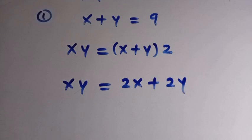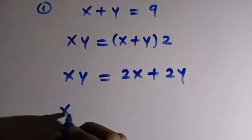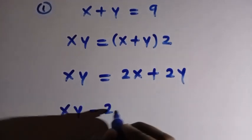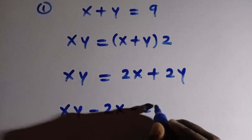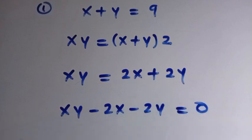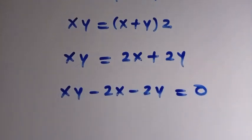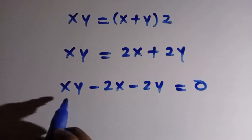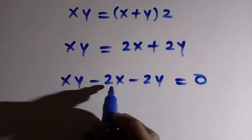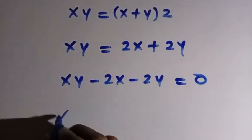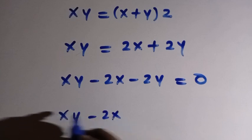Then let's take the whole of this here. We have xy minus 2x minus 2y equals 0. Then let's combine this together. So by combining this together, we have xy minus 2x.